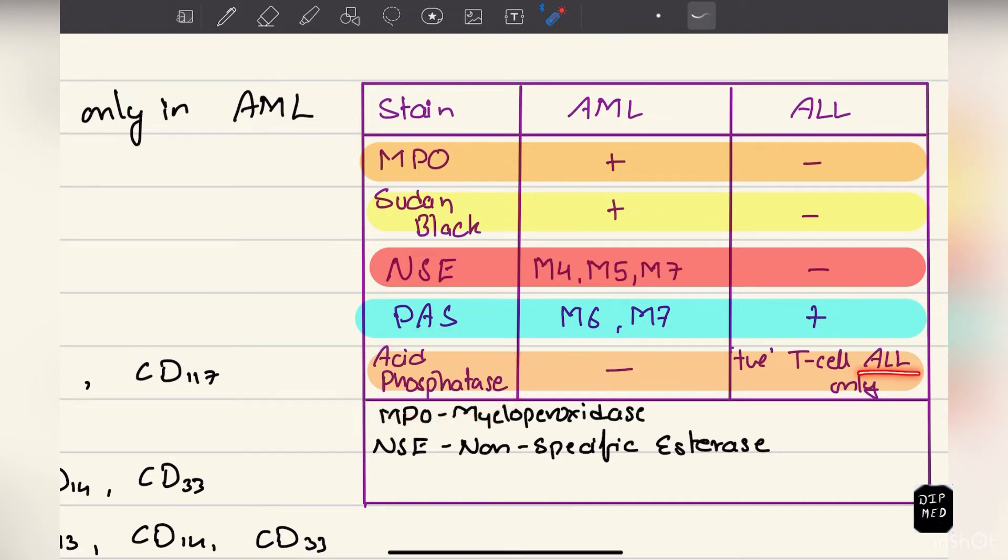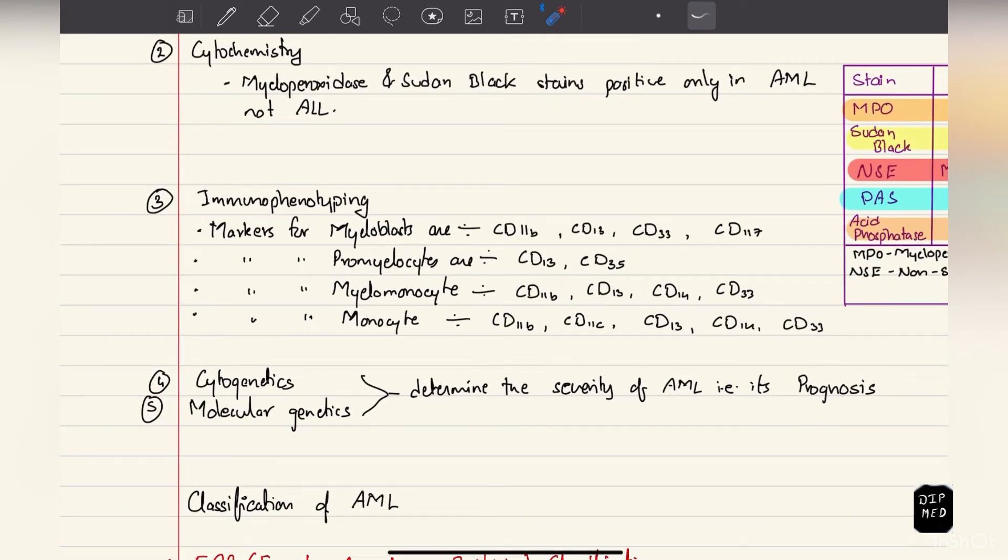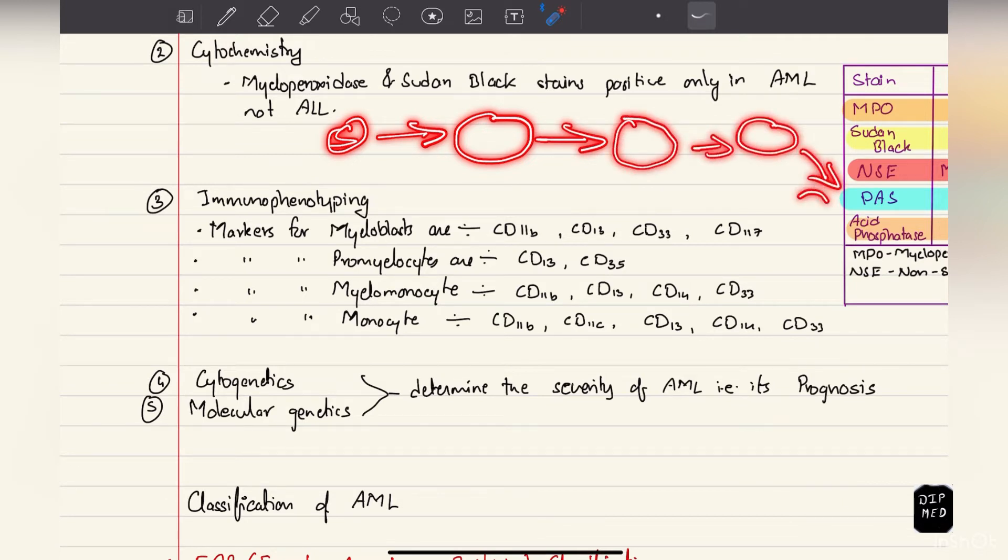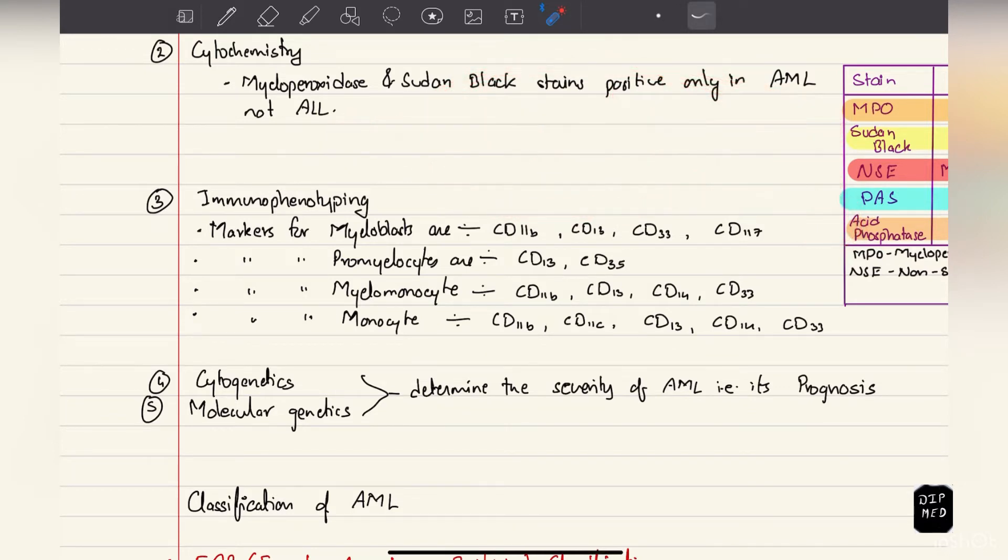Now onto the immunophenotyping: inside the bone marrow we have stem cells which differentiate into myeloblasts, then to promyelocyte, then myelomonocyte, and finally into mature cells. These are all the immature cells, and leukemia can occur due to proliferation of any of these cells. We have to look for these markers. Markers for myeloblasts include CD11b, CD13, CD33, and CD117. Markers for promyelocytes are CD13 and CD33. For myelomonocyte are CD11b, CD13, CD14, and CD33. Markers for monocyte are CD11b, CD11c, CD13, CD14, and CD33.